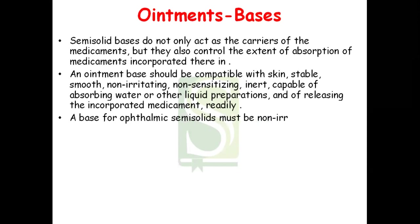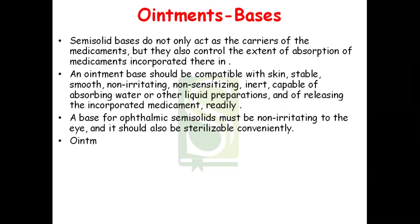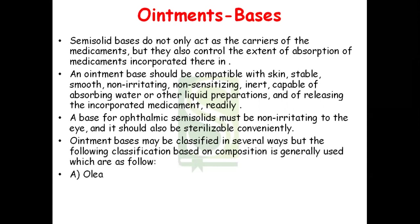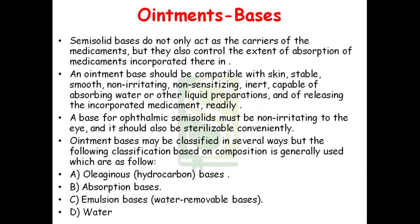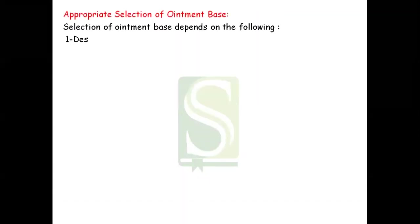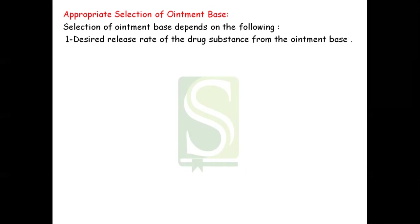A base for ophthalmic semi-solid must be non-irritating to the eye and should also be sterilizable conveniently. The ointment bases may be classified in several ways but there are typically four classes: the first type is oleaginous base, then absorption base, emulsion base which is the water removable base, and water soluble base. We need to very appropriately select the ointment base and it mostly depends on certain criteria.